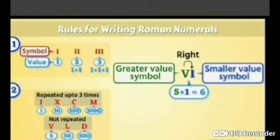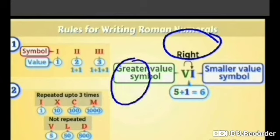The third rule says that if the symbol of a smaller value is written to the right of the symbol of a greater value, then the values get added. Now, let's understand that I, which has a smaller value as 1, is written to the right of V, which is having a greater value. So here we will add 5 plus 1, which gives me the value as 6.